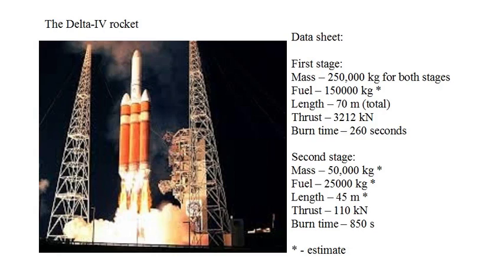In a previous video, we modeled a rocket as a point mass. In this lesson, we'll model a rocket as a 2D rigid body, and we'll steer the rocket by directing the rocket thrust. The model is based on a Delta IV rocket, shown in the picture, minus the booster rockets, shown in that configuration.